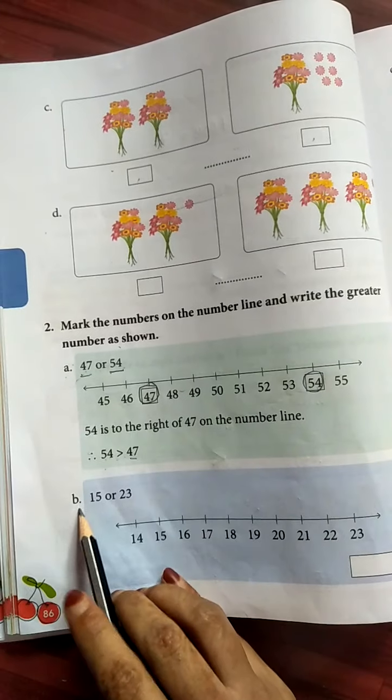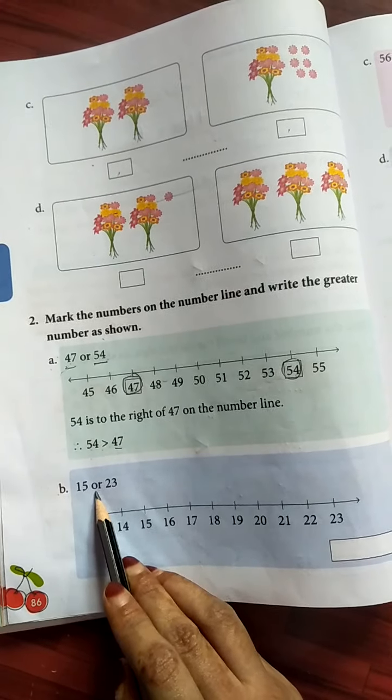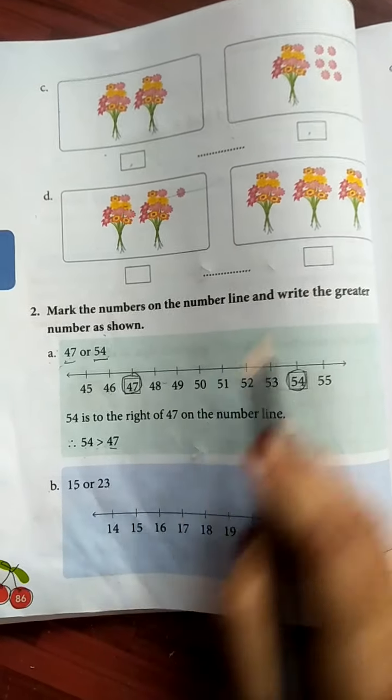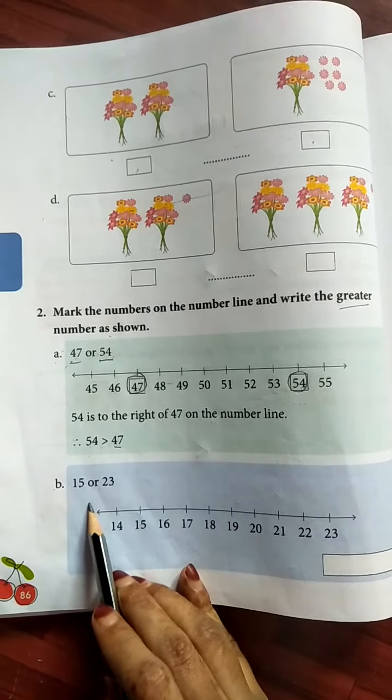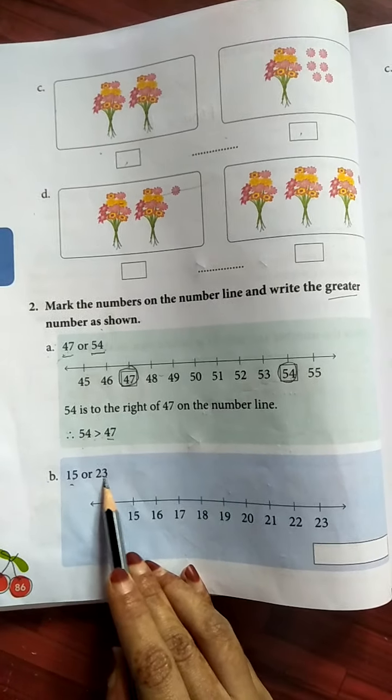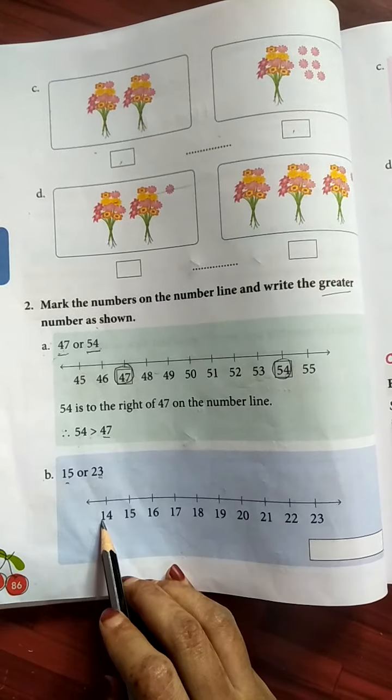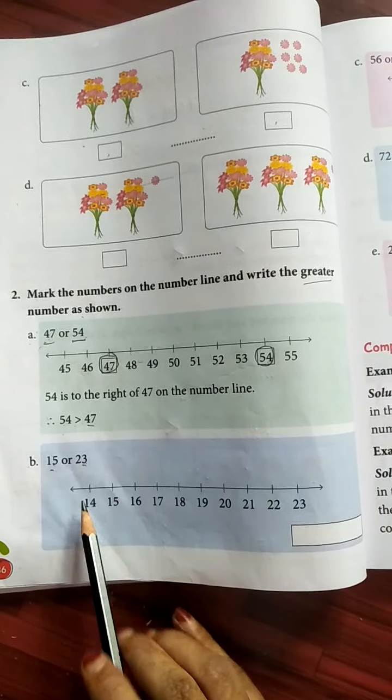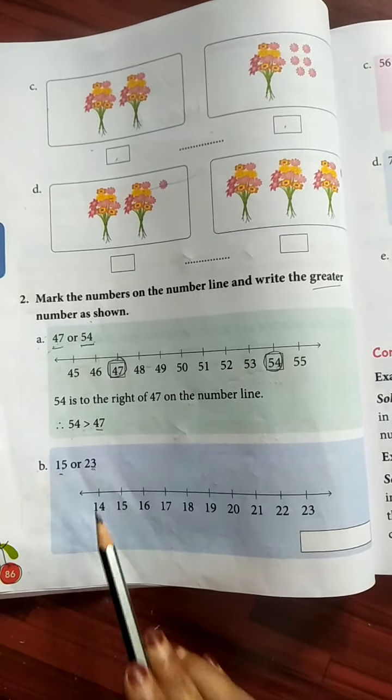Now see here B. 15 or 23. So write the here greater number. So find out which one is greater, 15 or 23. Now first, where is 15 in this number line? See here.